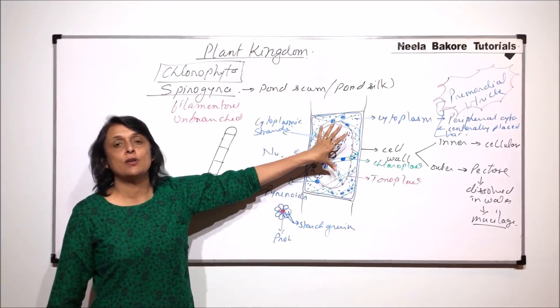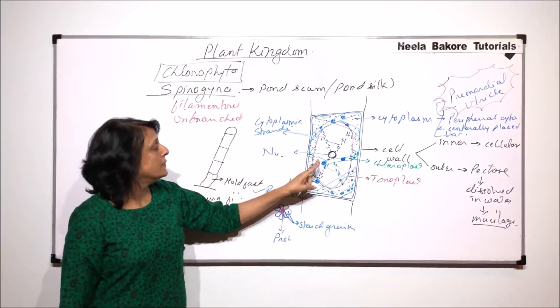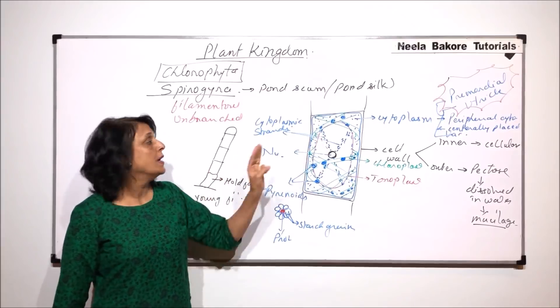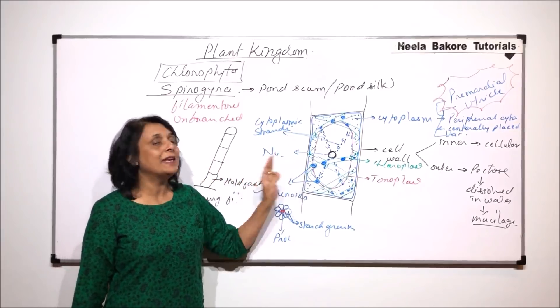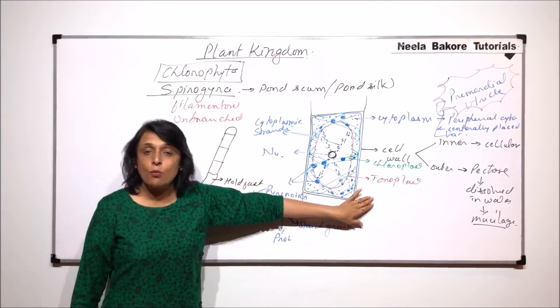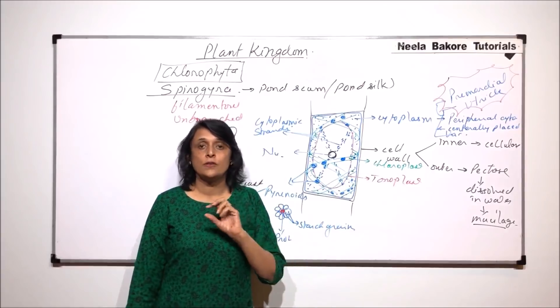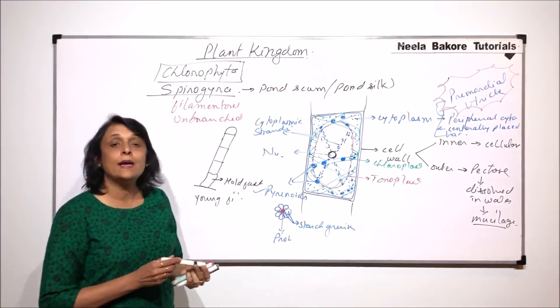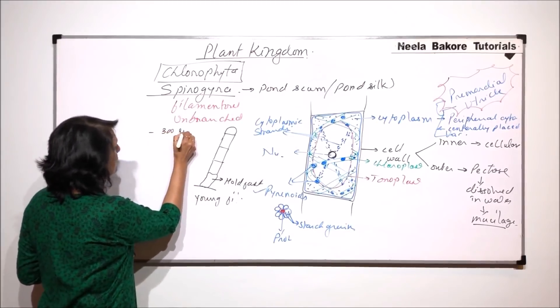Few things which we have to remember and which are very unique to Spirogyra are the primordial utricle, the centrally placed large vacuole and peripheral cytoplasm. Second, the nucleus is suspended inside the vacuole with the help of cytoplasmic strands. Third, there are many ribbon-like chloroplasts which are spirally arranged and in which many pyrenoids are embedded. Common structures are like any eukaryotic cell. The cell wall has two layers - the inner is cellulose, outer is pectose because of which the mucilaginous layer is formed and that is where these two names, pond scum and pond silk, come from. There are about 300 varieties or species of Spirogyra which are known.